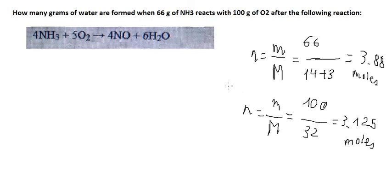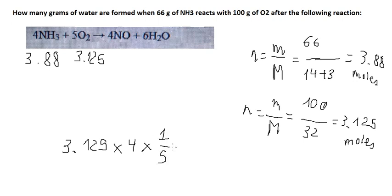Now we put the values in here. I need to compare the moles to see which one is the lowest. We have 3.125, I want to find the moles of NH3 equivalent, so we have 3.125 multiplied by 4 and divided by 5. We will have about 2.5. That means 2.5 is lower than 3.88, so we can say that oxygen is the limiting reagent.